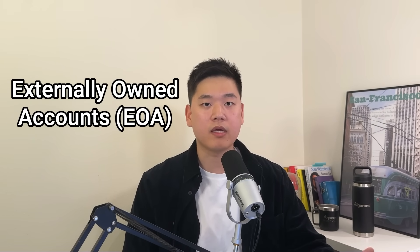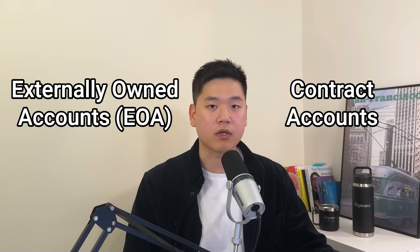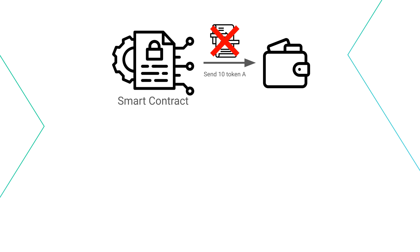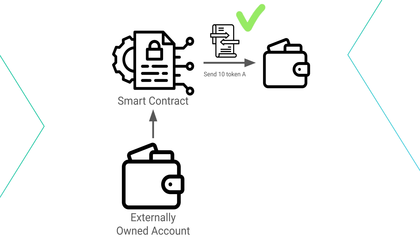On Ethereum, there are two types of accounts: externally-owned accounts, aka EOA, and contract accounts. EOAs are just normal accounts that can send transactions, and all Algorand accounts are similar to Ethereum's externally-owned accounts. On Ethereum, smart contracts are also accounts, and they're called contract accounts. Contract accounts cannot send transactions on their own and can only do so when an EOA calls the smart contract code that sends a transaction.